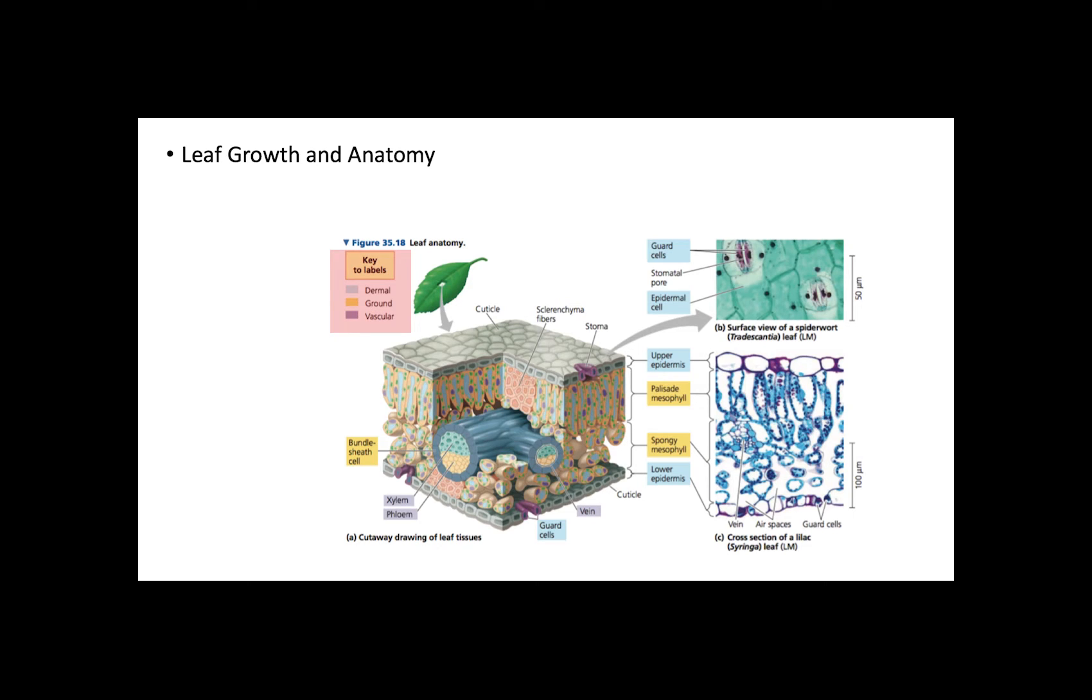Dermal, ground, and vascular tissues are also present in leaves, with the vascular tissue being continuous from the stem of the plant.